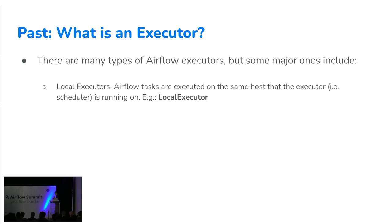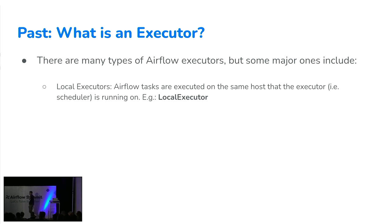There are three major types of executors. The first is local executors, where tasks are executed on the host the executor lives on — which is inside the scheduler. The local executor is one of the first ones people use when starting with Airflow. It's really convenient to set up, quick and easy to run, and fairly fast because tasks execute locally with no network requests. But you're sharing resources with the scheduler, so it's limited in that capacity.